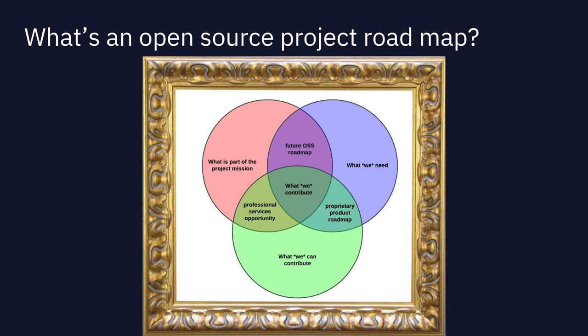How do we create consensus on what's good for the project? For vendor-driven projects collaborating with and building products around the project, the other aspects of this Venn diagram are interesting. What we need but don't have time to do yet — that's the future roadmap. What's not part of the project but we need and can contribute — that's my proprietary product I build on top of the open source project, which is potentially how I fund my participation and help it grow. And what I don't need but can do and other people need — maybe those are just services someone sells to help implement things.